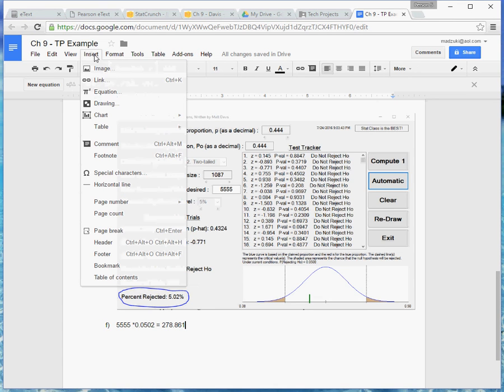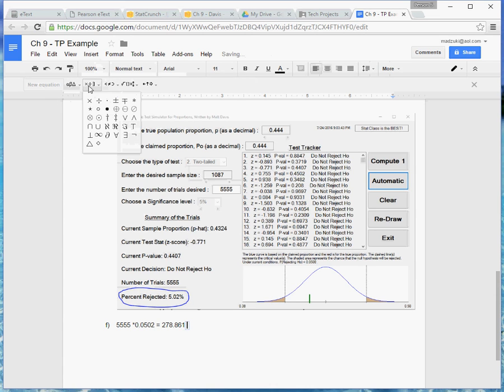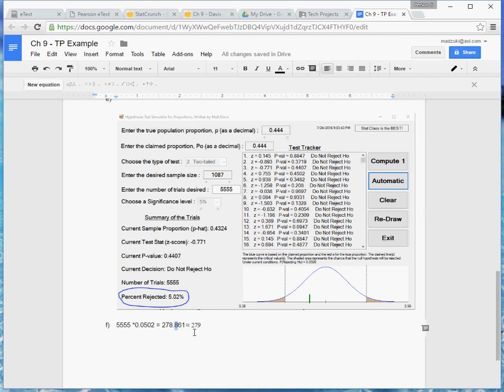So I'm going to go into my insert equation. And I'm going to look for the approximately equal sign, which is right there. And then I'm going to round that to the nearest whole number. Which in my case, because of this 8 right here, we're going to round up to 279. But if that had been like a 2, I would have rounded down to 278. So 279 rejections.